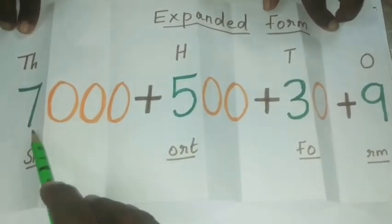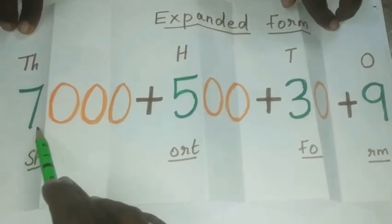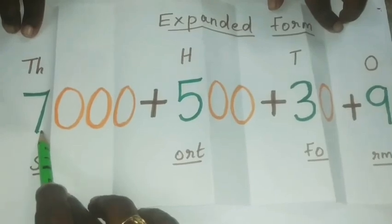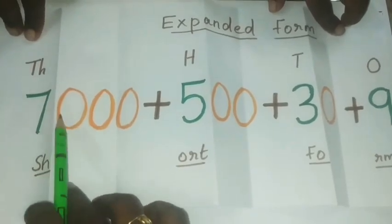So, what is the face value of first place? That is, 1000 place. What is the number? 7. So, what is the face value of 7? 7.